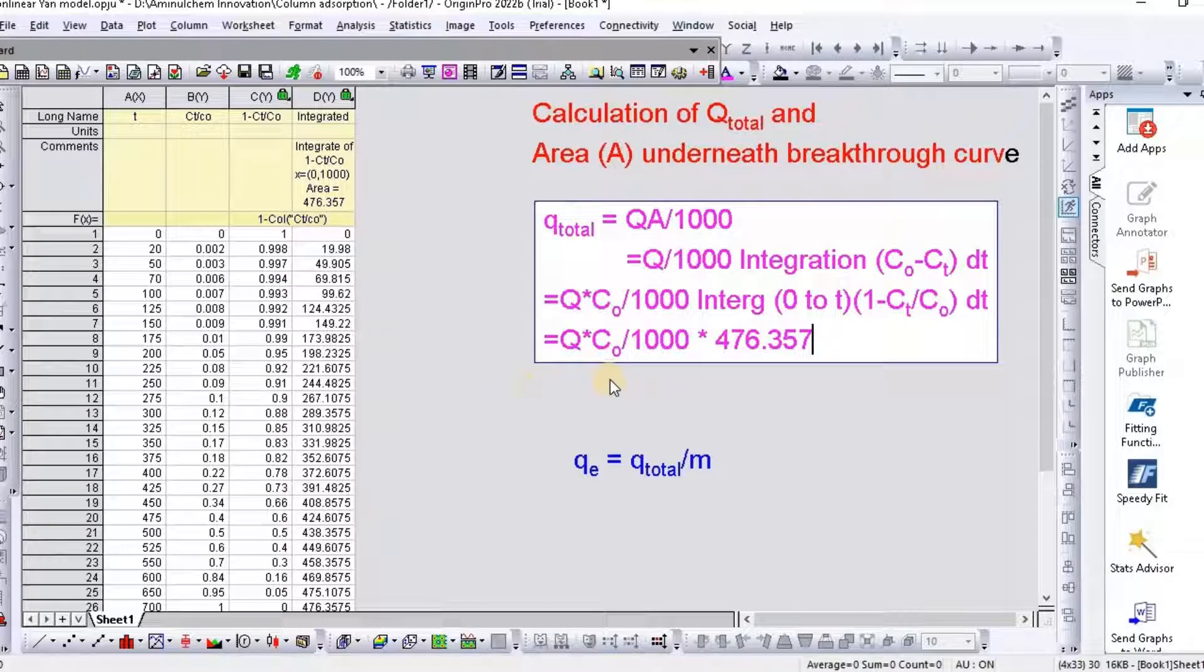So then you know the capital Q, which is flow rate, and then you can easily calculate Q total.